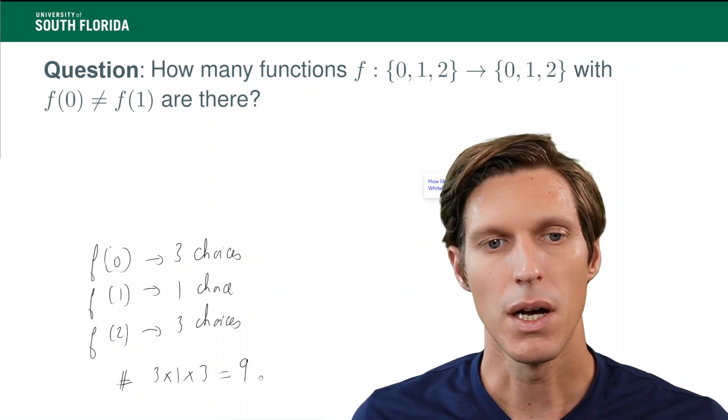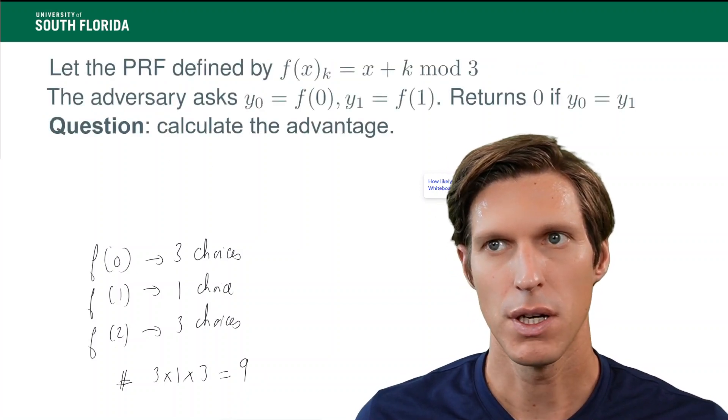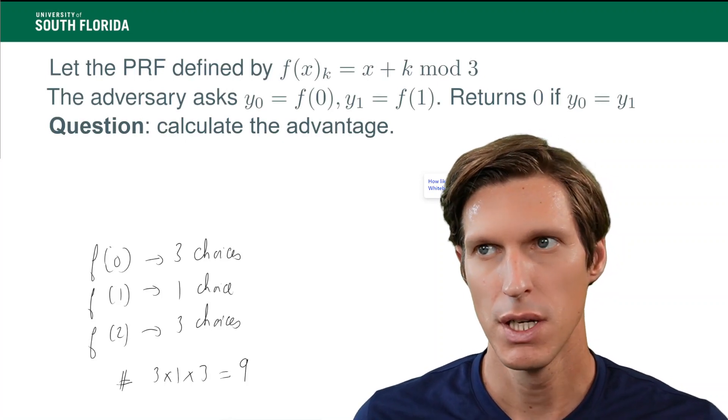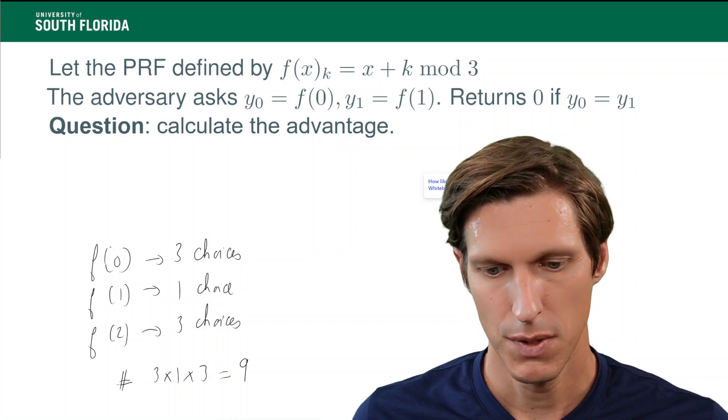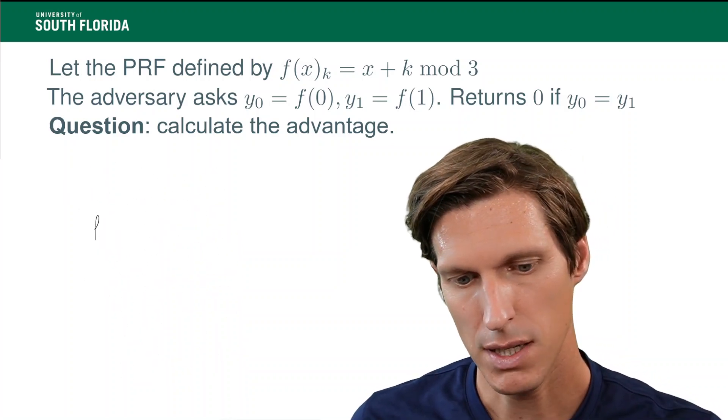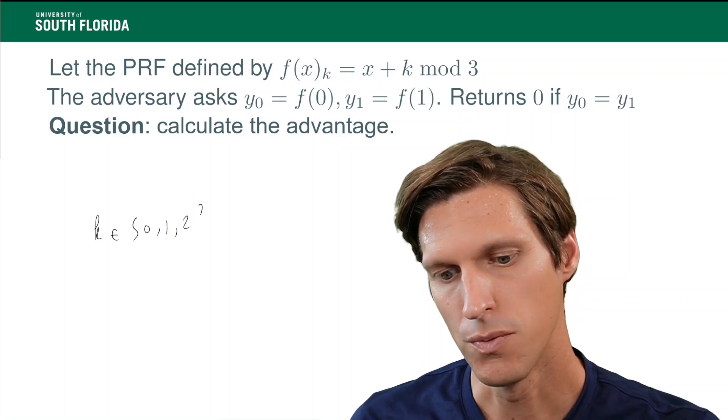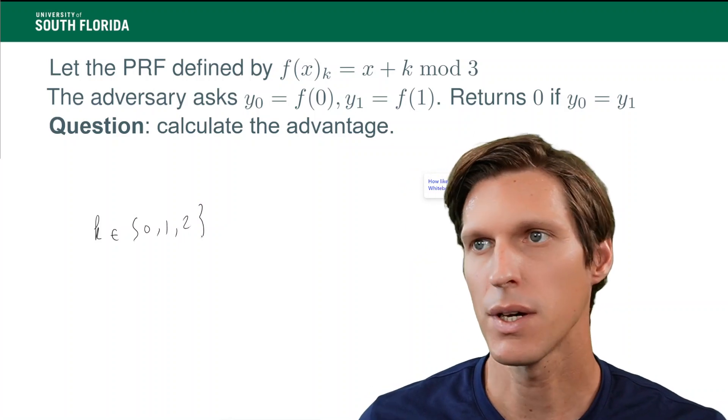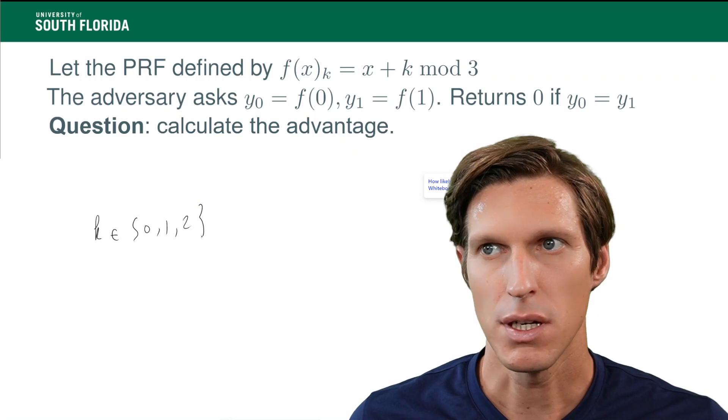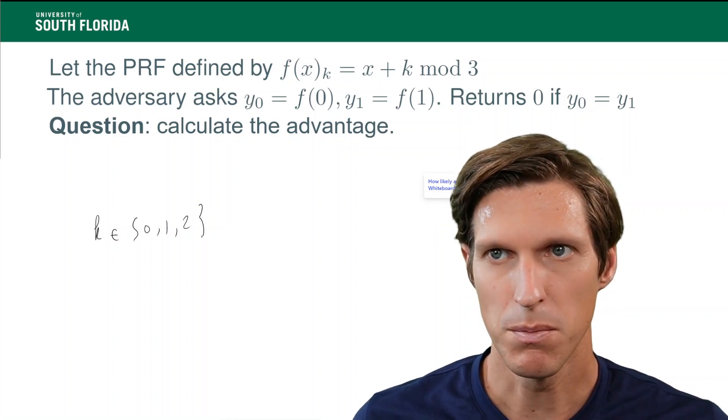So, let's move on to an actual example of a pseudo-random function. So, let's say my pseudo-random function takes a key. My key is also in {0, 1, 2}. And then f indexed by k is just, it maps x to x plus k modulo 3. Very simple.